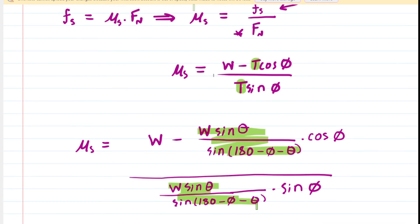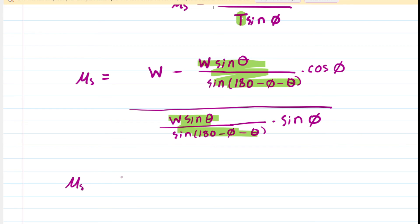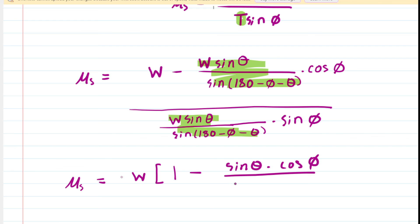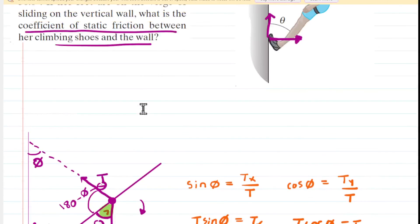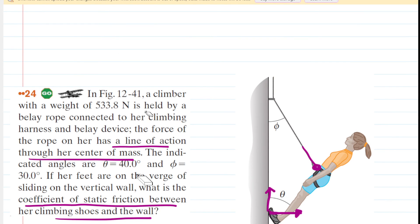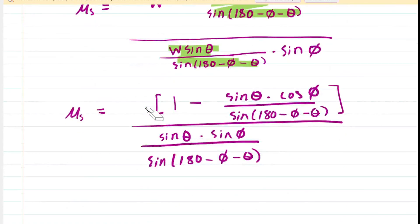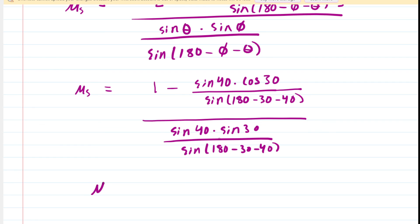After substituting, we factor out W from the numerator, which cancels with W in the denominator — so we don't need to know the climber's weight. With theta = 40 degrees and phi = 30 degrees as given in the problem, we plug those values into the expression. Carefully entering this into a calculator gives a coefficient of static friction of approximately 1.19, which is the correct answer.